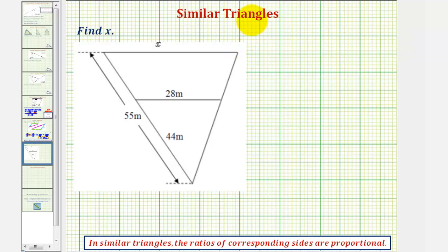Here we're given two similar triangles and asked to find the length of side x. When we have similar triangles, the ratios of corresponding sides are proportional, which means we can find x by setting up a proportion using ratios of corresponding sides.